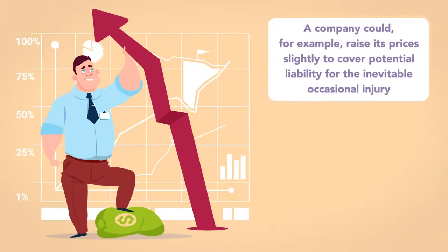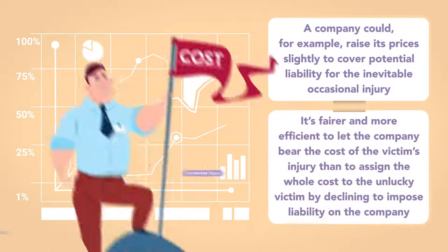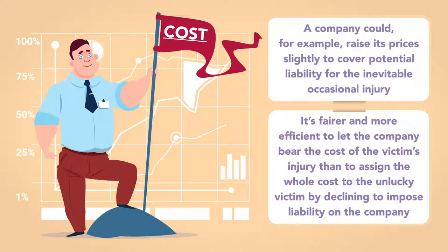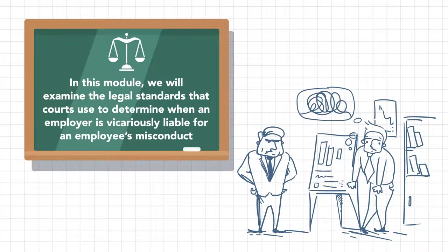Companies have the resources to spread the cost of compensating injured victims across their customer bases. A company could, for example, raise its prices slightly to cover potential liability for the inevitable occasional injury. It's fairer and more efficient to let the company bear the cost of the victim's injury than to assign the whole cost to the unlucky victim by declining to impose liability on the company. In this module, we will examine the legal standards that courts use to determine when an employer is vicariously liable for an employee's misconduct.